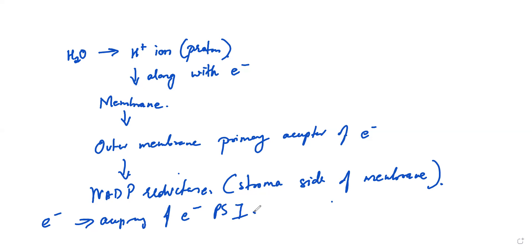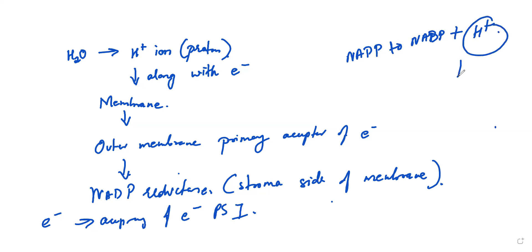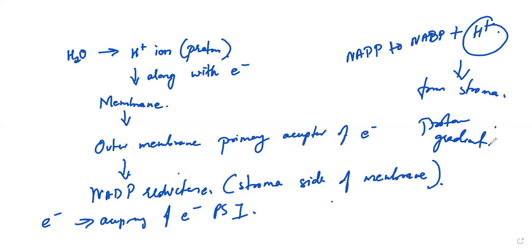NADP reductase catalyzes the conversion of NADP to NADPH. So NADP plus H+ gives NADPH. Whatever protons are there, they will be removed from the stroma. When electrons are accepted and protons are formed and removed, this is called a proton gradient, which occurs across the thylakoid membrane.